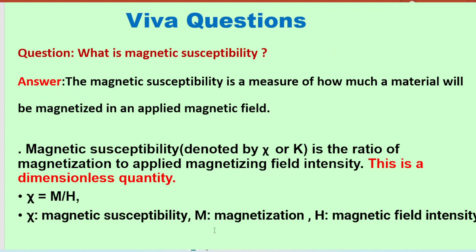The first viva question is: what is magnetic susceptibility? Magnetic susceptibility is a measure of how much a material can be magnetized in an applied magnetic field. It is denoted by k or chi, and it is the ratio of the magnetization to the applied magnetic field intensity. It is a dimensionless quantity because chi equals M/H, and M and H have the same units. M is magnetization and H is magnetic field intensity.